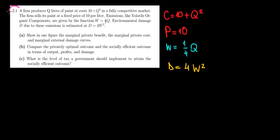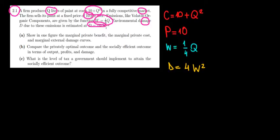Let's start working on question 2.1. We have a firm that produces a certain quantity of paint at a given cost in a fully competitive market. The firm sells the paint at a price of $10 per liter. There are emissions due to the components of the paint, described by the function W equals one over four times Q, and there is a damage function D(W) from those emissions to the environment.